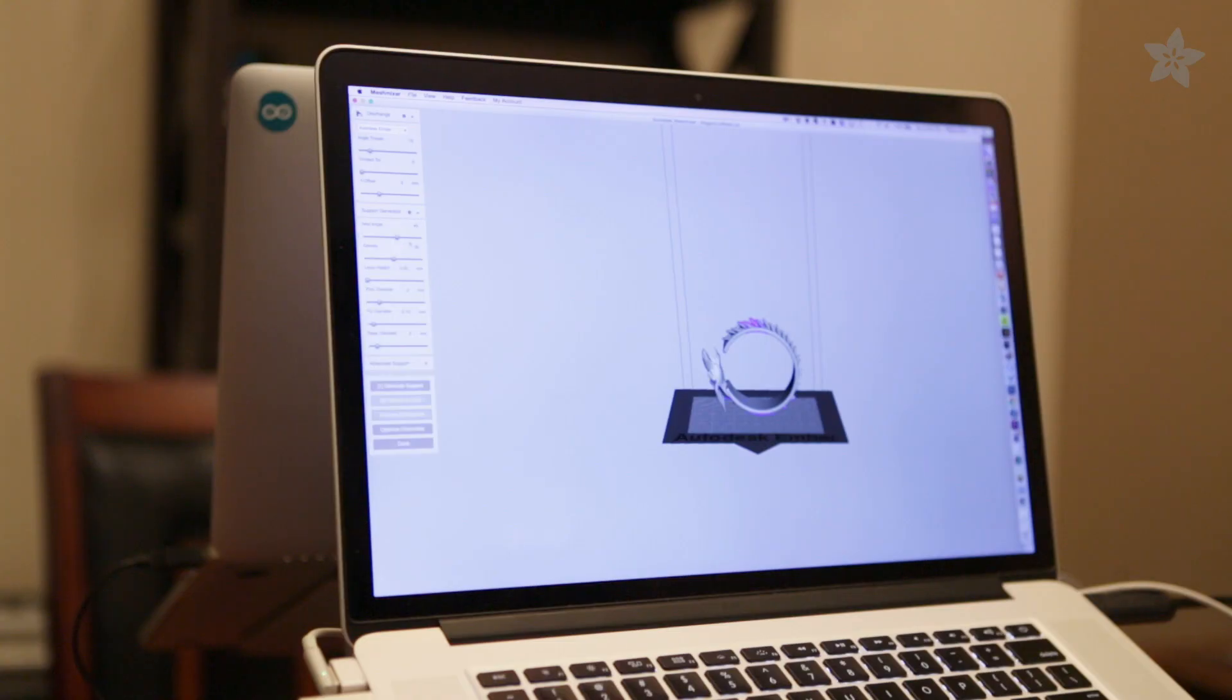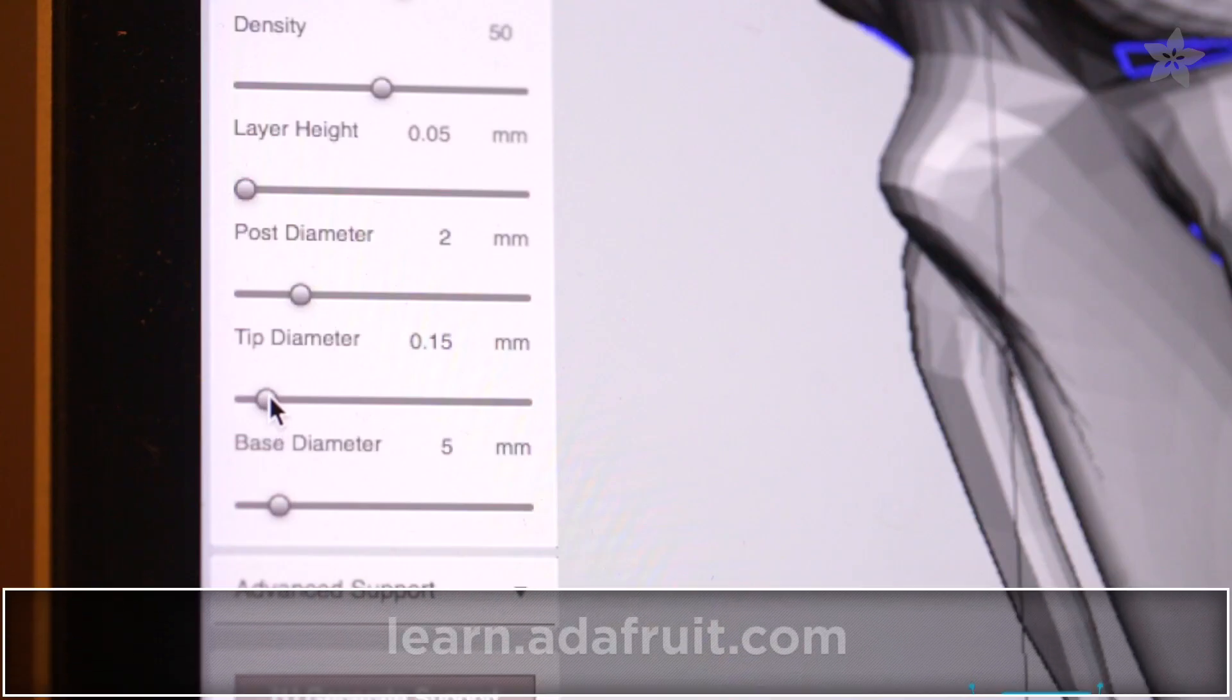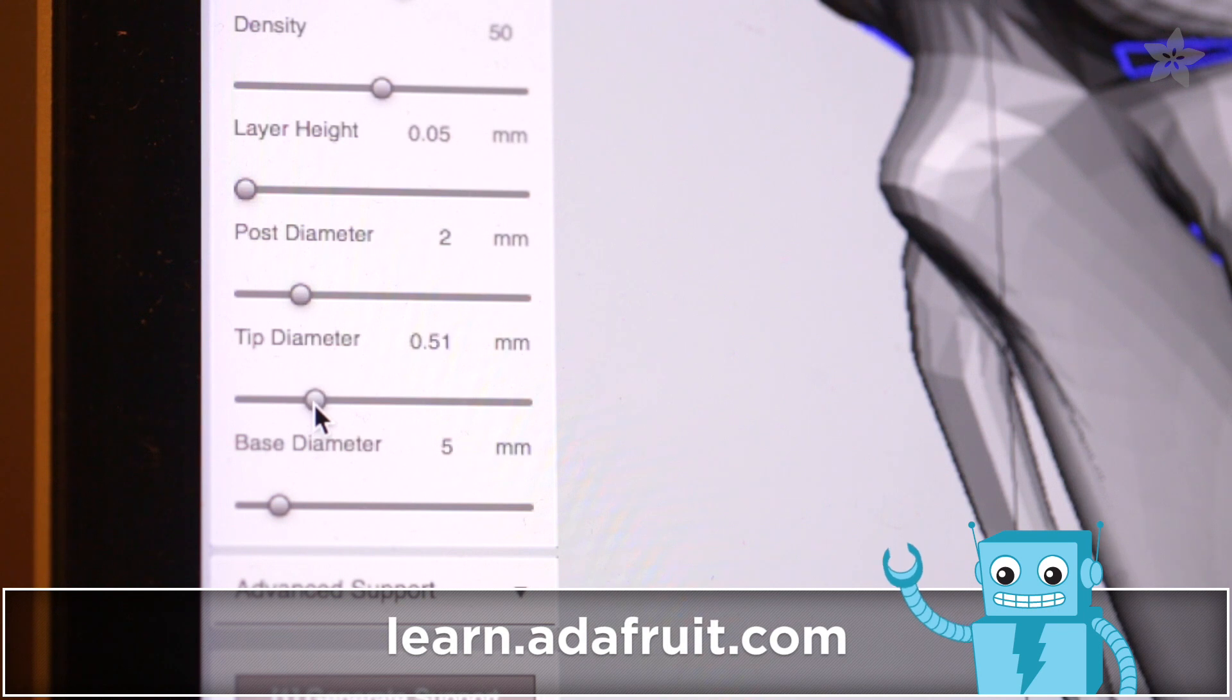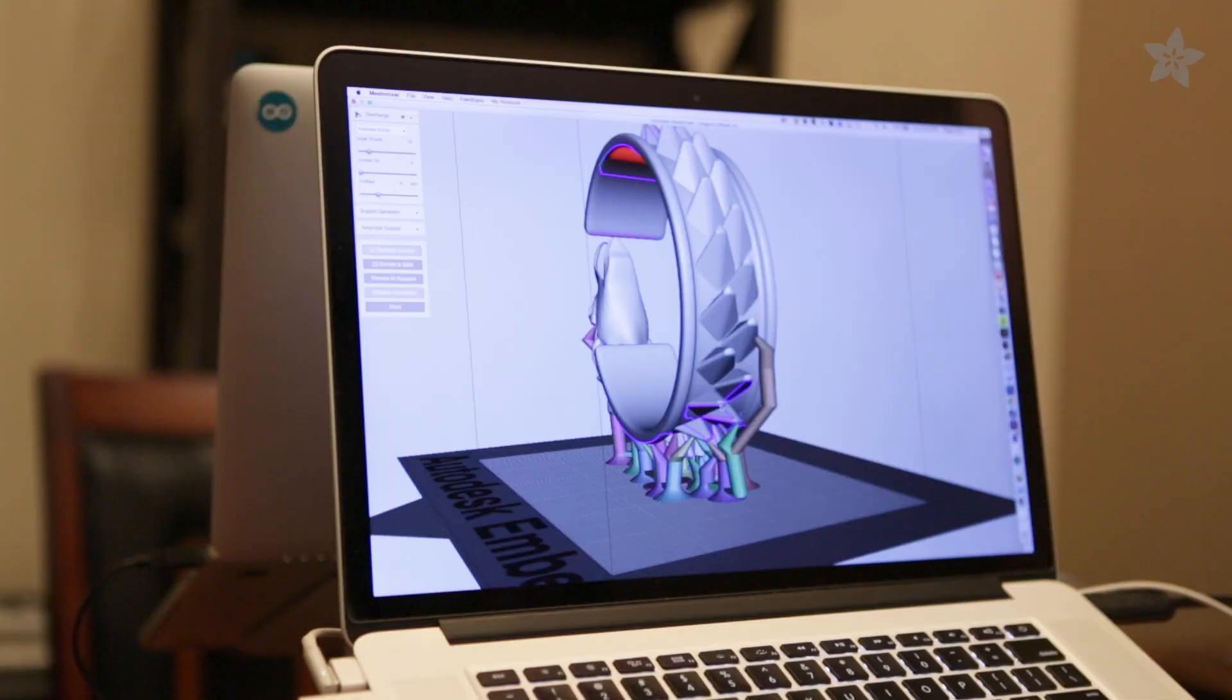You can optimize support structures to print with a tighter hold by upping the tip diameter. Under the support generator options, you can update the defaults from 0.15mm to 0.5mm. This is going to increase the width so it holds objects more firmly, making print fails less likely.